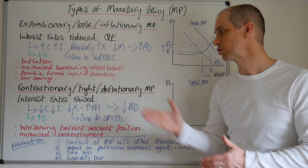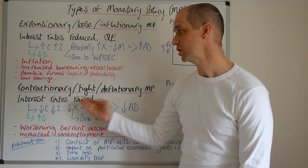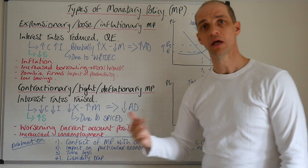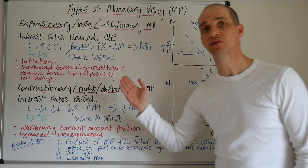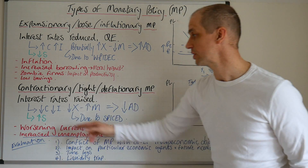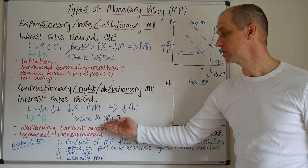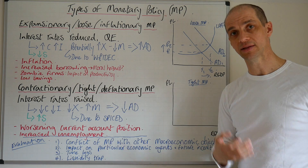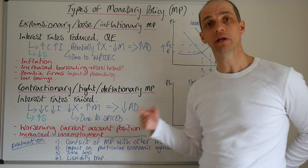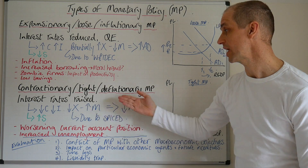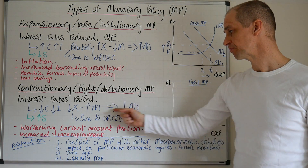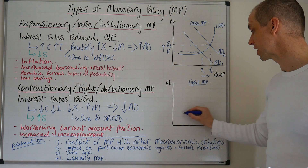Let's contrast this with a contractionary, tight or deflationary monetary policy. Here we've got interest rates being raised — the cost of borrowing increases and the reward for saving actually increases, so saving levels are expected to increase. Meanwhile, consumption and investment will decline as borrowing costs rise and people and firms are incentivised to actually save more. We're also likely to see the currency gain strength against other countries — strong pound means imports become cheap and exports become dear. There's likely to be a decline in exports and an increase in the actual amount of imports within the economy, so our net exports position worsens and this is likely to lead to a decline in aggregate demand.